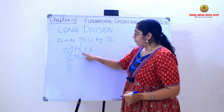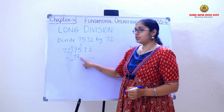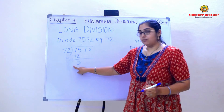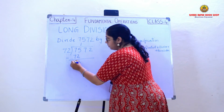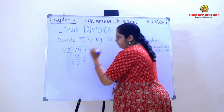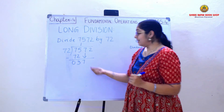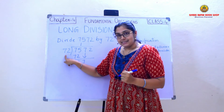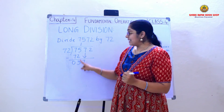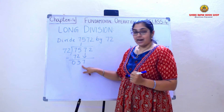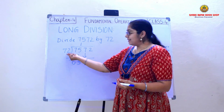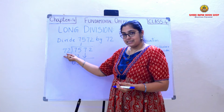I will subtract it. So 5 minus 2 is 3, and 7 minus 7 is 0. Now I need to bring down this number 7. But children, see the divisor is greater than this number. So as the divisor is greater than this number, I cannot divide or I will not get a value in the multiplication table of 72.